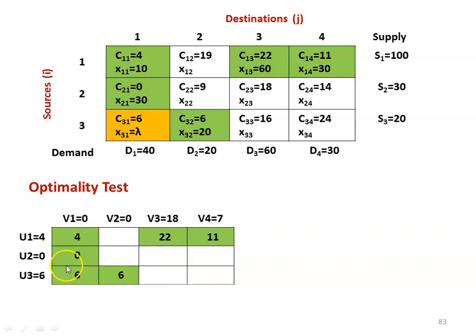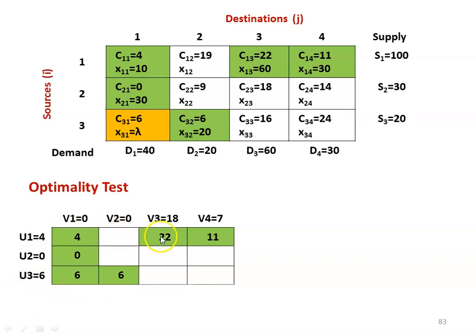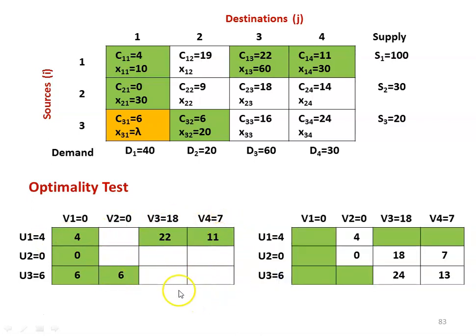We write the cell values of the allotted cells: 4, 0, 6, 6, 22, and 11. Assigning row values U1, U2, U3 and column values V1, V2, V3, V4, with V1 fixed at 0: U1 becomes 4, U2 becomes 0, U3 becomes 6. With U3=6 and cell value 6 in column 2, V2 becomes 0. V3 becomes 18 and V4 becomes 7. For the unallotted cells (white cells), the UV values are: 4+0=4, 0+0=0, 6+18=24, 0+7=7, 6+7=13.